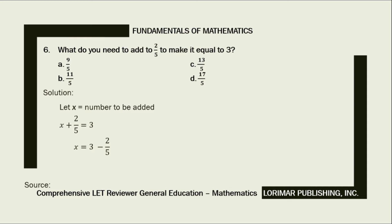The fractional equivalent of the whole number 3 with a denominator of 5 is 15 fifths. To validate: 15 divided by 5 equals 3, therefore 15 fifths equals 3. So we have 15 fifths minus 2 fifths.